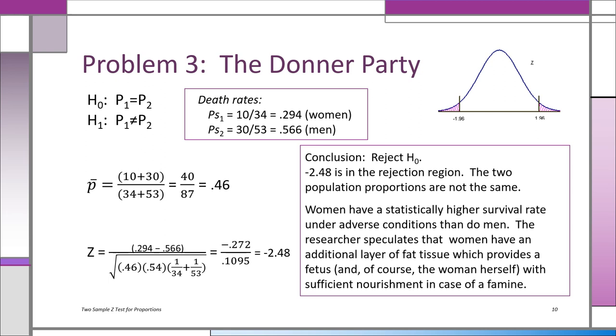Now, as in the previous two problems, you know what happens when you took the alpha of 0.05 and you split it, so you have 0.025 in the right tail, which gives you Z value plus 1.96, and 0.025 in the left tail, which is Z value of minus 1.96. Minus 2.48 is in the rejection region.